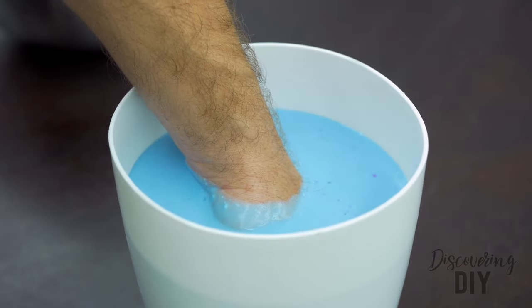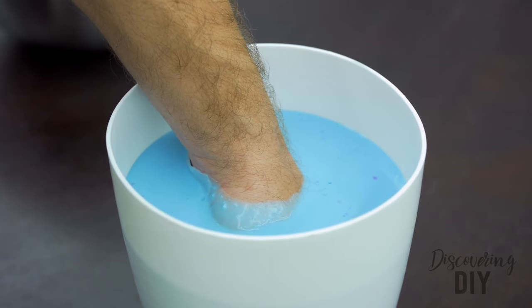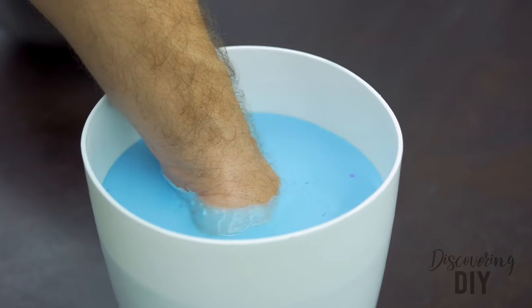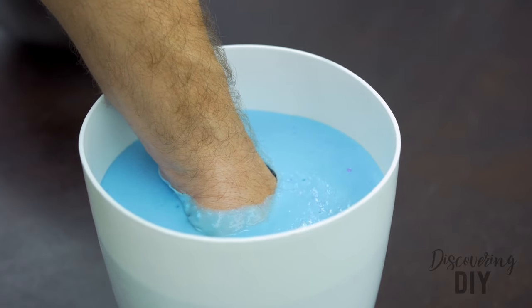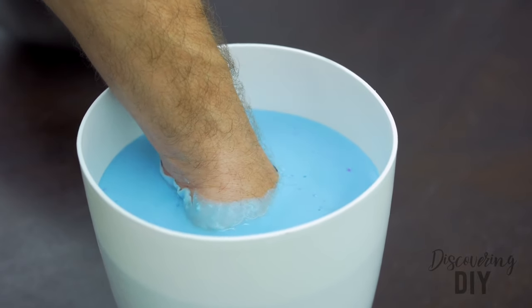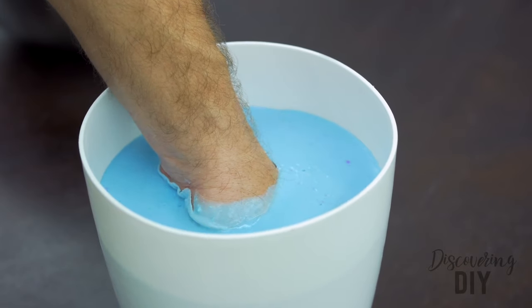Once the molding material has hardened, remove your hands by slowly wiggling them from side to side to release the suction. Remove one hand at a time, being careful not to damage the mold.